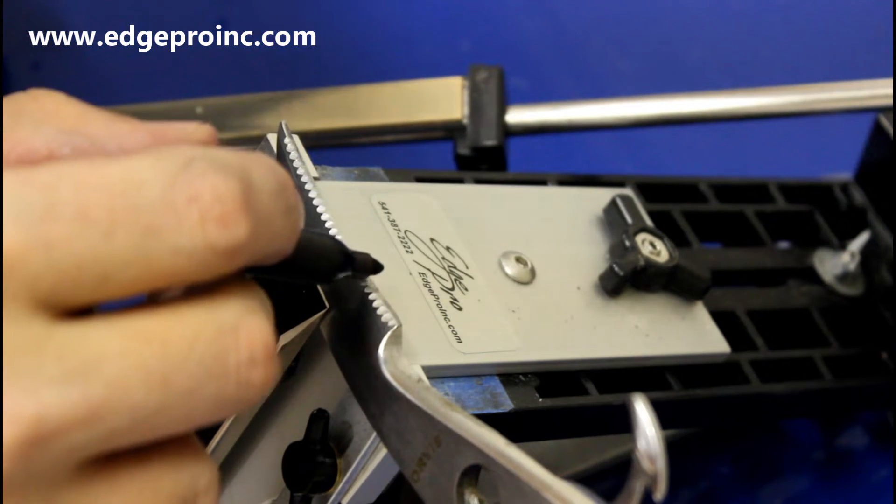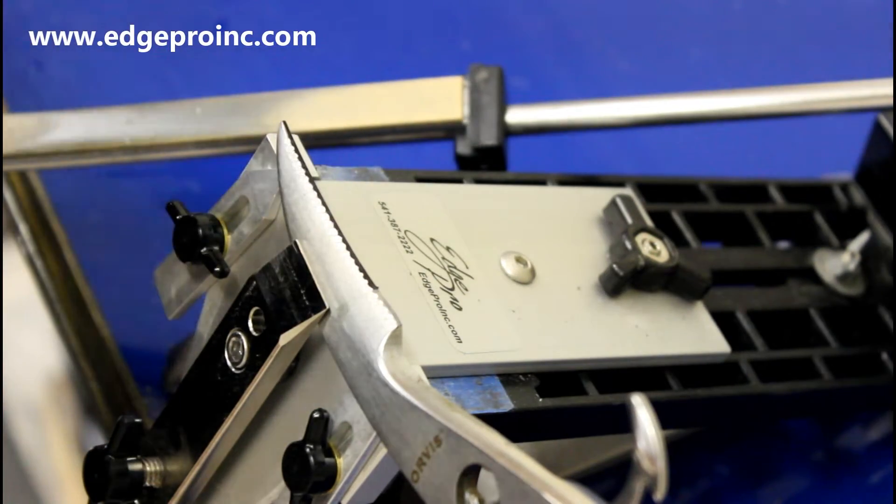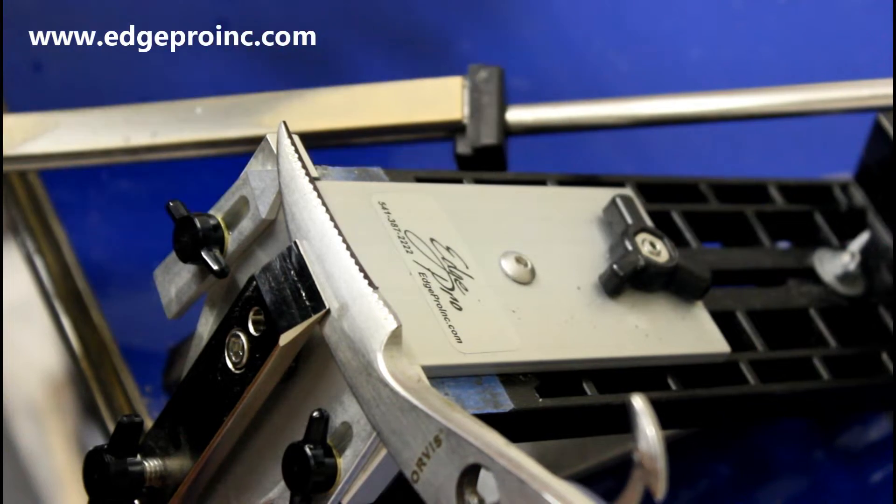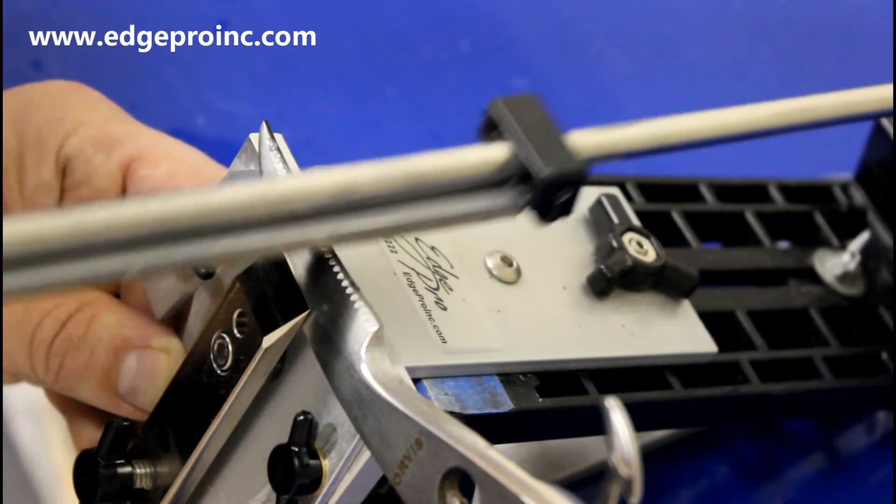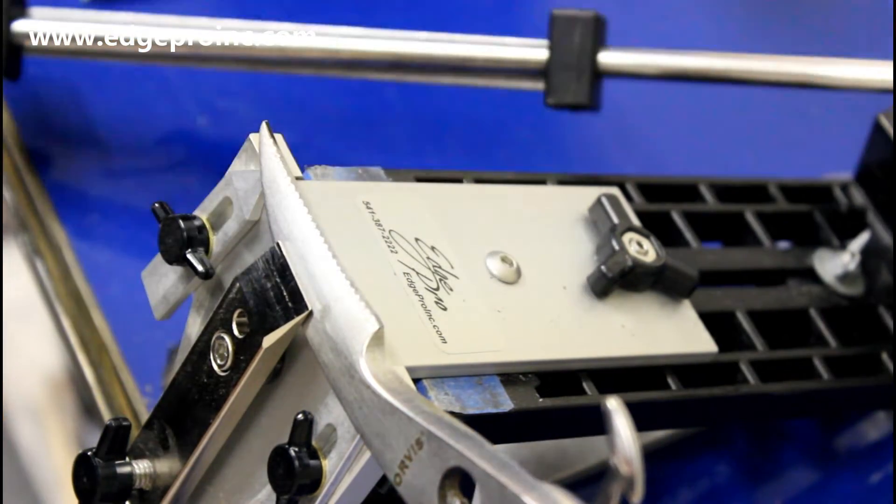So even though I had the angle properly set for the other side of the scissor, I always double check it on the other side because a lot of the time I'll find that the other side of the scissor will be sharpened at a slightly different angle. Lock that in. So I'm going to double check it.